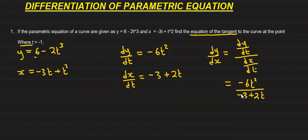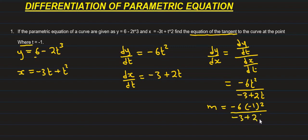Substituting t equals negative 1: dy over dx equals negative 6 into negative 1 squared, all divided by negative 3 plus 2 into negative 1. That gives negative 6 over negative 3 plus negative 2, which equals negative 6 over negative 5, giving positive 6 over 5.